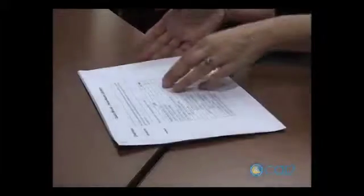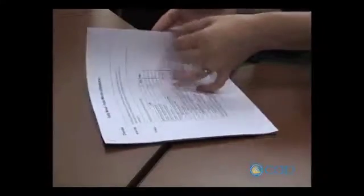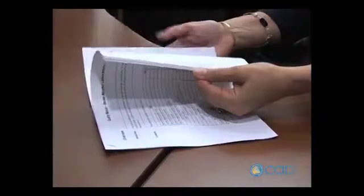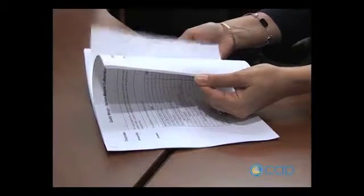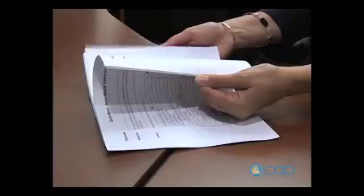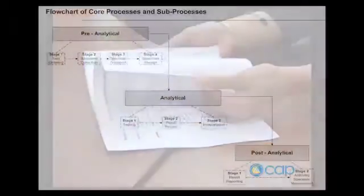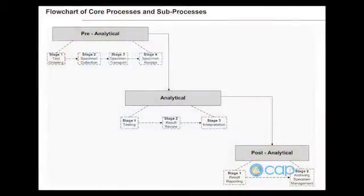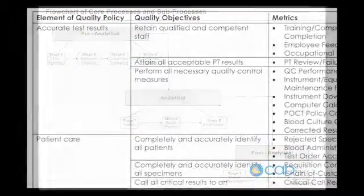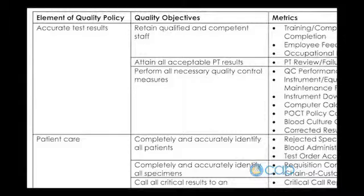Here's a quality manual that would be completely appropriate for an ISO-accredited laboratory. Notice it's only about 30 pages long. It contains high-level process descriptions, tables that show how the quality policy cascades into measurable elements.